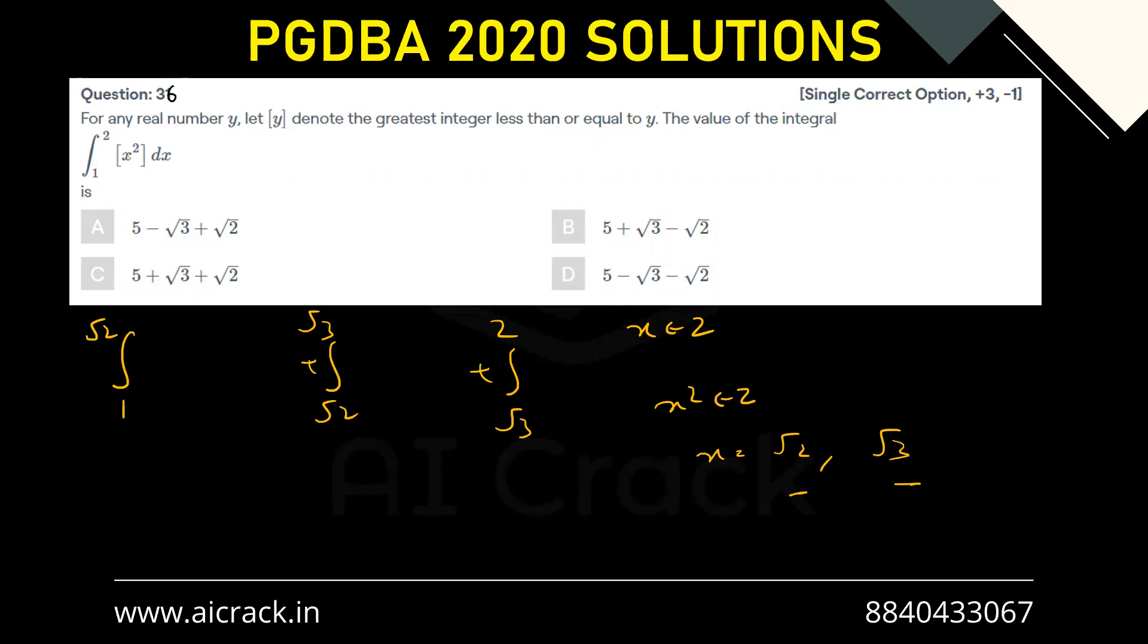Now from 1 to √2, we know that x² is ranging from 1 to 2, so the gif function would not range, it would equal 1, dx.